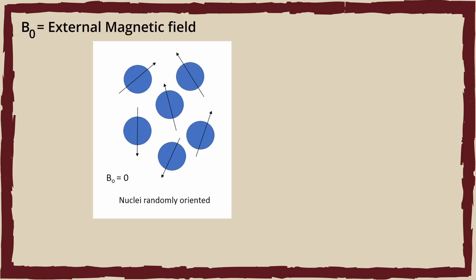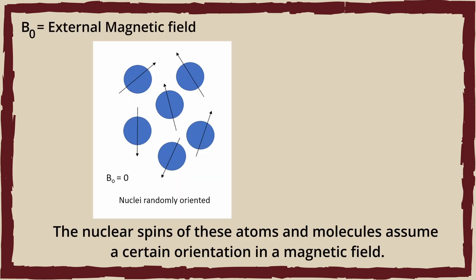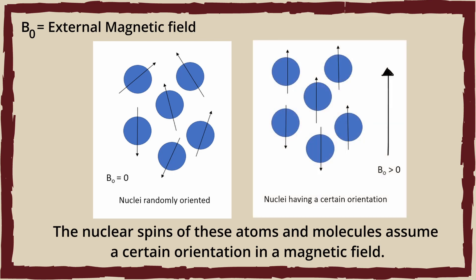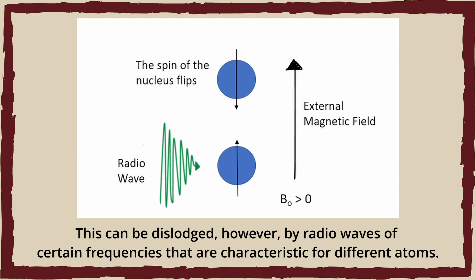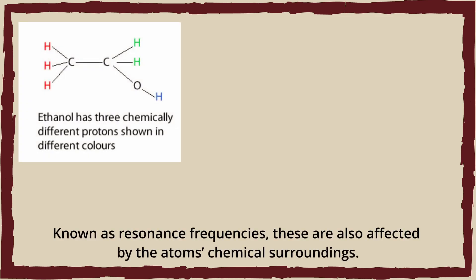According to the Nobel Prize official website, the nuclear spins of atoms and molecules assume a certain orientation in a magnetic field. This can be dislodged by radio waves of certain frequencies that are characteristic for different atoms. Known as resonance frequencies, these are also affected by the atom's chemical surroundings.